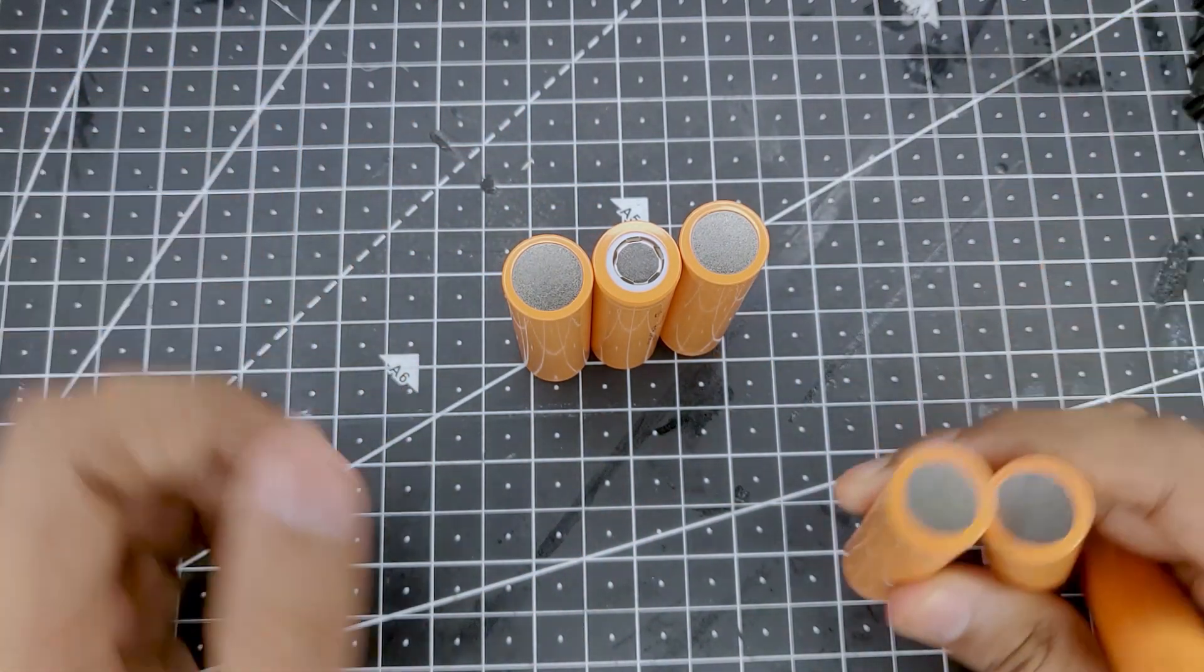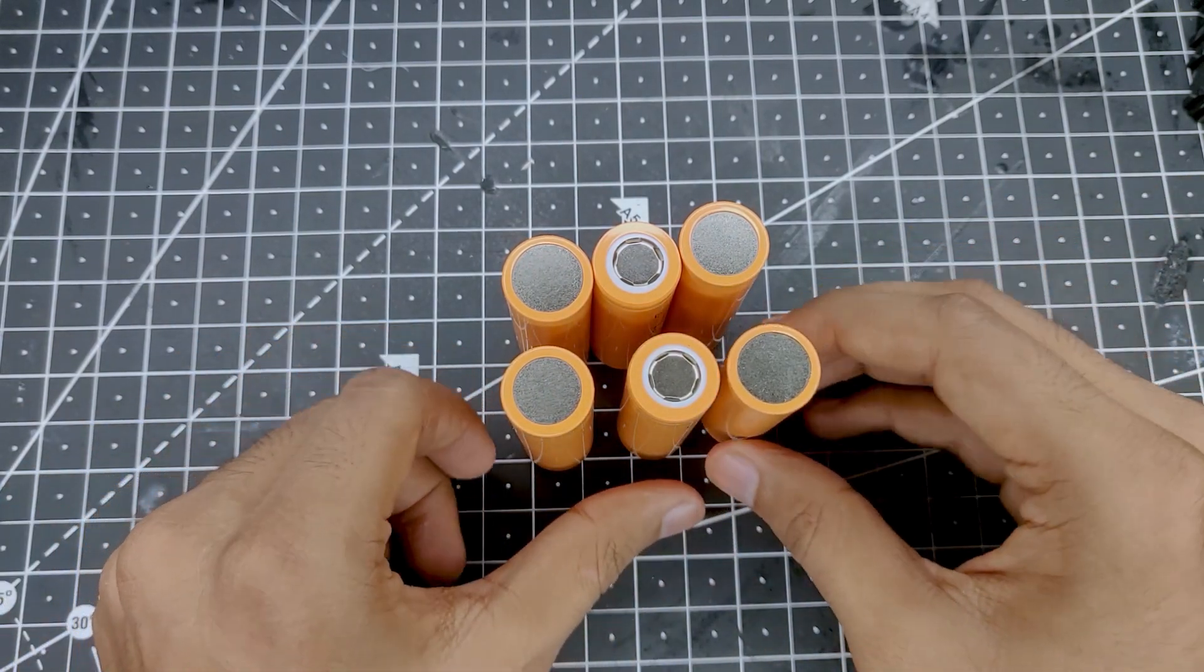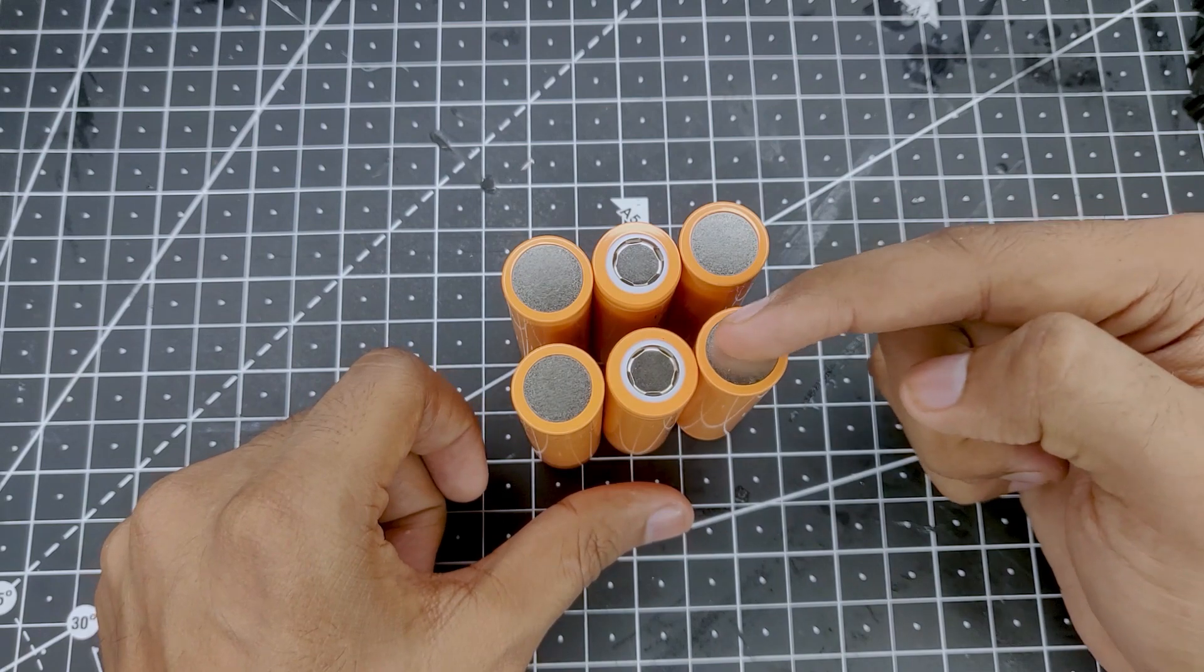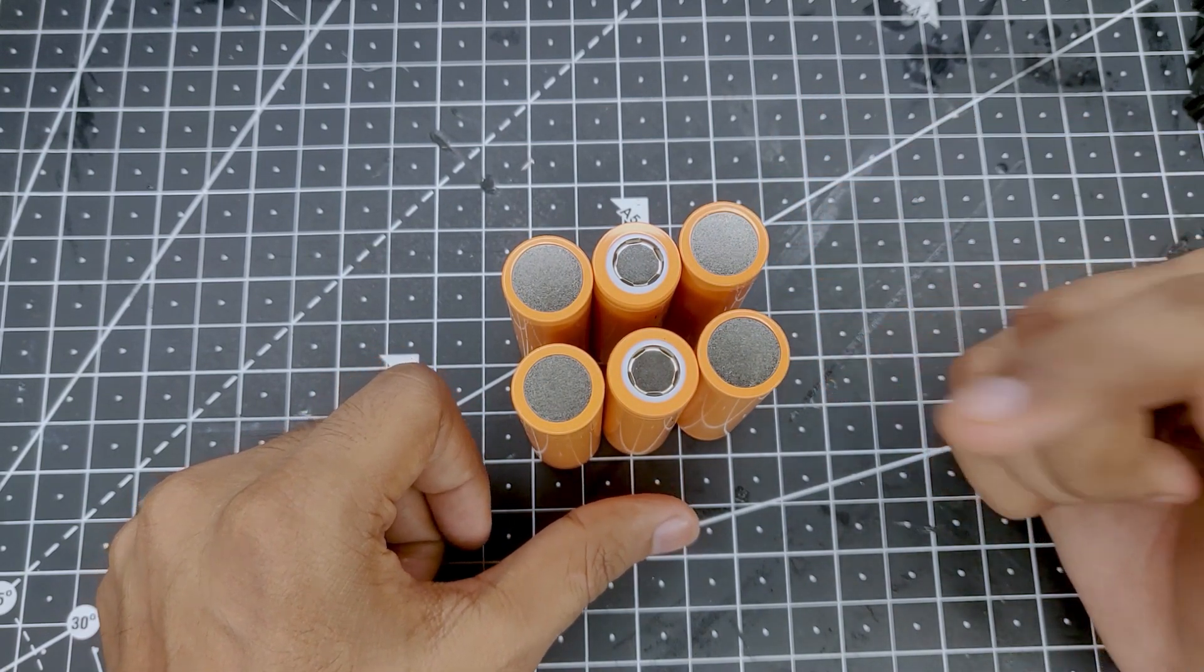Then I'll add another row of batteries just like this so that we'll have the same voltage, but as these are connected in parallel we'll have double the storage and more amperes coming out of the battery.